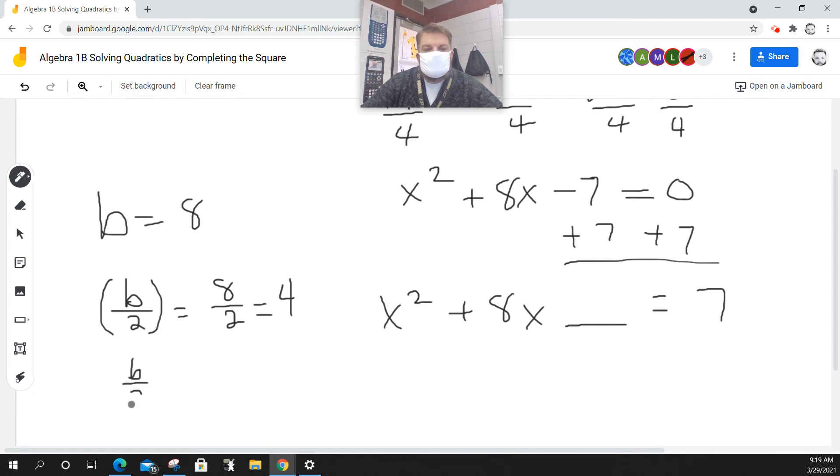I'm going to need to take b over 2 and square it, which is just 4 squared, which is 16. So that means I'm going to add 16 to both sides.